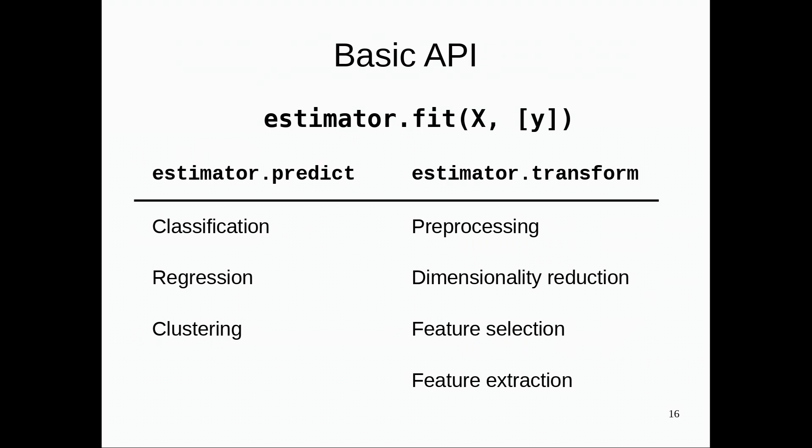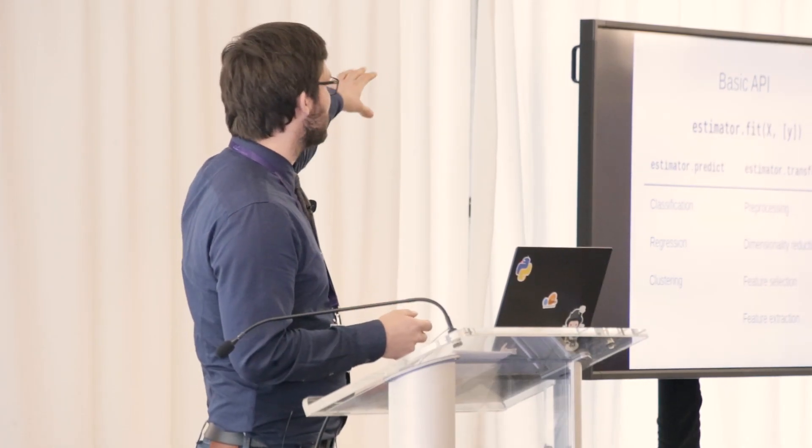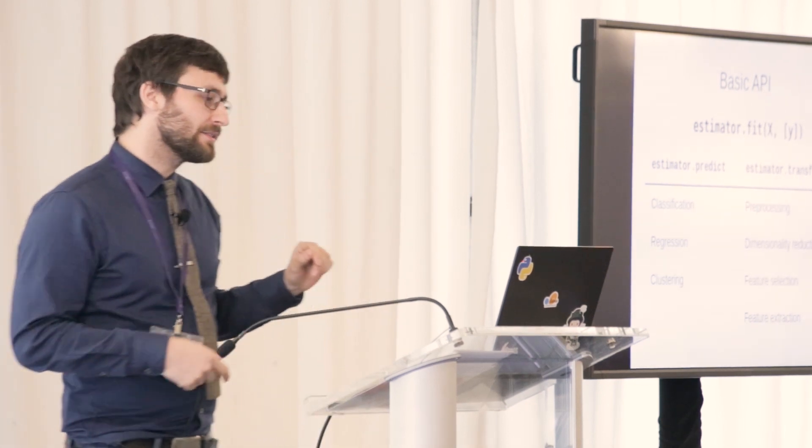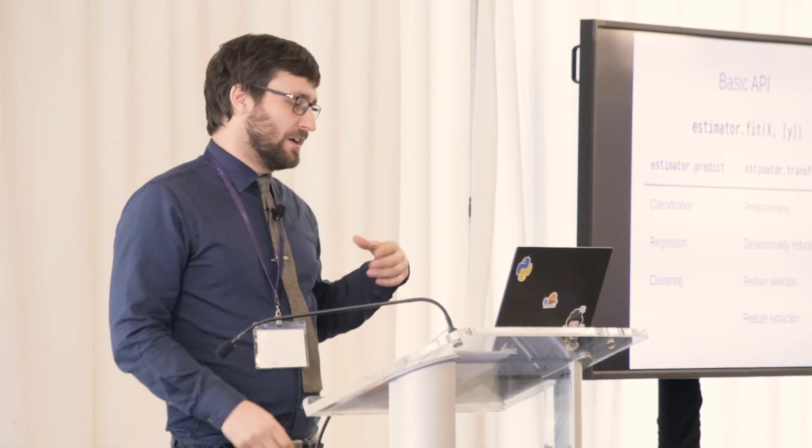So these are basically the three main functions you need to understand for Scikit-learn. We call our models estimators. Estimators could be anything, like a random forest or scaling your data or something like this. All have a fit method. They always take the data X. If it's a supervised method, it also takes some target output Y. If you predict something that is like a labeling, for classification, regression, and clustering, use the predict method to make this prediction.